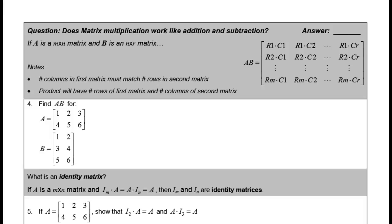Let's move into page two of the notes. We're going to start talking about matrix multiplication. Does matrix multiplication work like addition and subtraction? Addition and subtraction were pretty intuitively obvious — we added or subtracted the same position in each matrix, and the matrices had to have the same dimension. So does matrix multiplication work the same? The simple quick answer is no, it does not work the same.